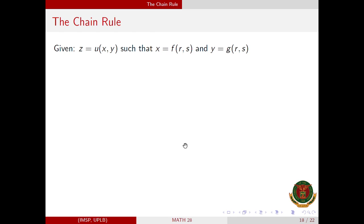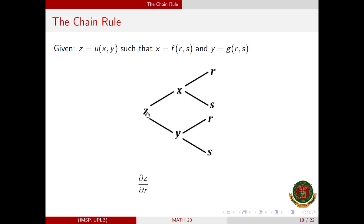Extending this to functions in two variables: if we are given z equals u of x and y, such that x equals f of r, s and y equals g of r, s, then z is a function of x and y, and both x and y are functions of r and s.